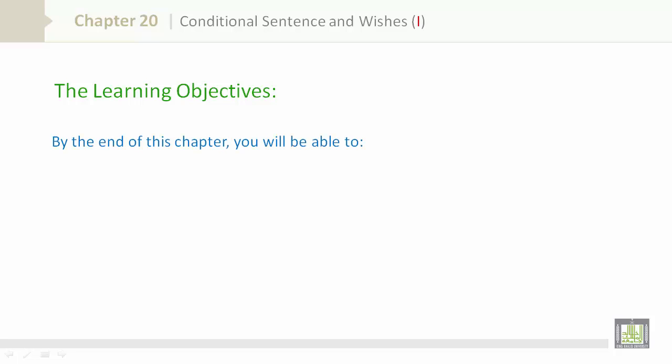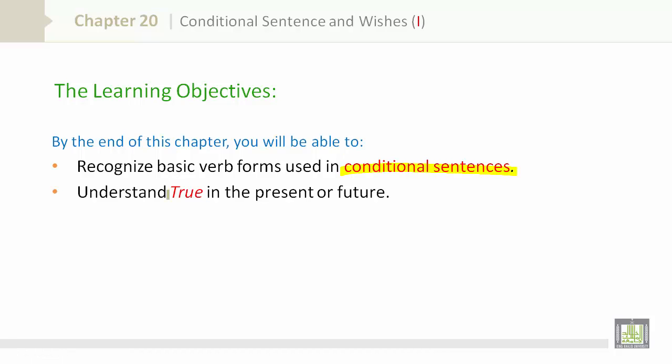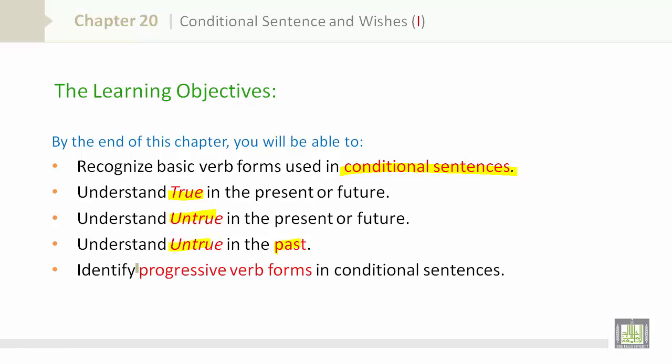By the end of this chapter, you will be able to recognize basic verb forms used in conditional sentences, understand true in the present or future, understand untrue in the present or future, understand untrue in the past, and identify progressive verb forms in conditional sentences.